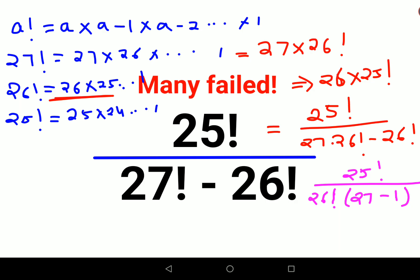Again, 25 factorial will remain as it is, and 26 factorial can be written as 26 × 25 factorial × 26, because 27 minus 1 is 26.